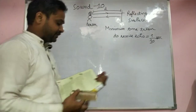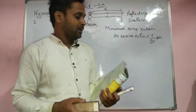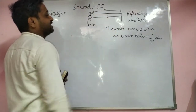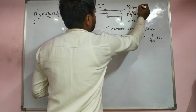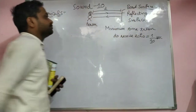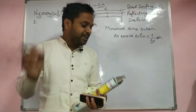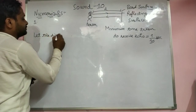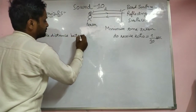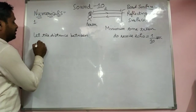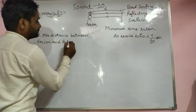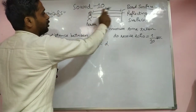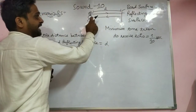Now we start the first numerical. Page number 94: calculate the minimum distance at which a person should stand in front of a reflecting surface — a hard surface — so they are able to hear the echo. Let the minimum distance between the person and the reflecting surface be D.